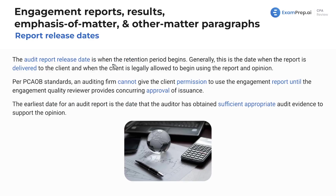The audit report release date is when the retention period begins. Per PCAOB standards, an auditing firm cannot give the client permission to use the engagement report until the engagement quality reviewer provides concurring approval of issuance. This means the auditing firm cannot give the client permission to use the report — to give to the SEC, to the PCAOB, to the bank, to investors, to creditors, to anyone — until the engagement quality reviewer provides approval. That's likely going to be another partner within the firm. The earliest date for an audit report is the date that the auditor has obtained sufficient appropriate audit evidence to support the opinion.